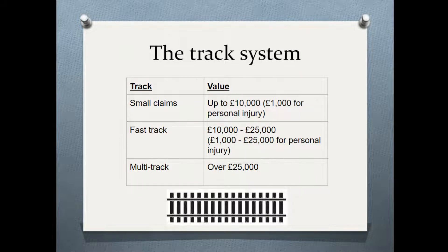The way you determine which court hears which case is using the three-track system. There's a small claims track for cases worth up to £10,000 — or £1,000 if it's a personal injury case. The fast track is for claims worth £10,000 to £25,000, or £1,000 to £25,000 for personal injury. The multi-track is for all cases worth over £25,000.